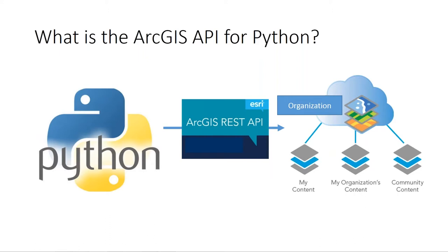What is the ArcGIS API for Python? Basically, you're using Python and working with the ArcGIS REST API or REST endpoints exposed from the ArcGIS platform. When we talk about the ArcGIS platform, we're talking about the organization — ArcGIS Enterprise or ArcGIS Online. You connect into your Web GIS and you're able to script or automate workflows or call functionality from that Web GIS using Python.